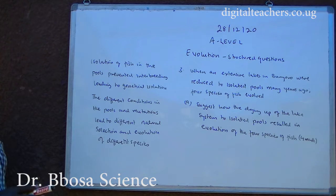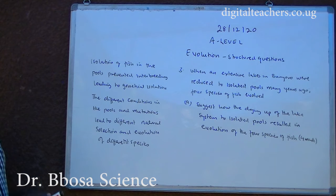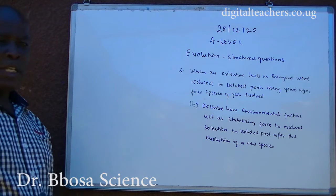Isolation of fish in the pools prevented interbreeding leading to genetic isolation. The different conditions in the pools and mutations led to different natural selection and evolution of different species.